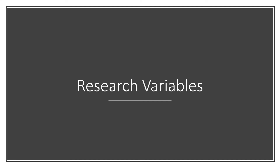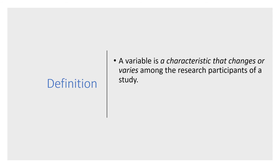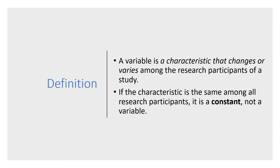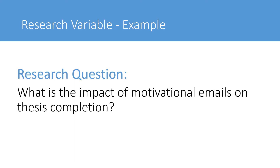In discussions of research questions, you will frequently hear the term 'research variables.' A research variable is a characteristic that changes or varies among the research participants of a study. If the characteristic is the same among all research participants, it is called a constant, not a variable. Let's look at a research question to illustrate this.